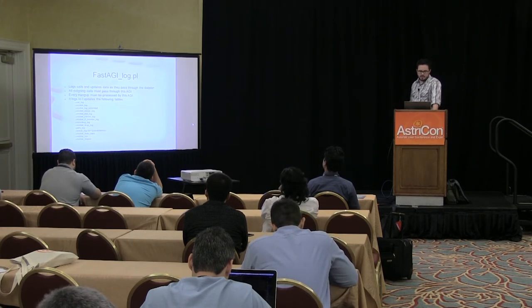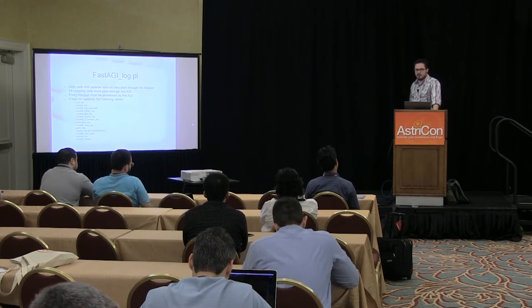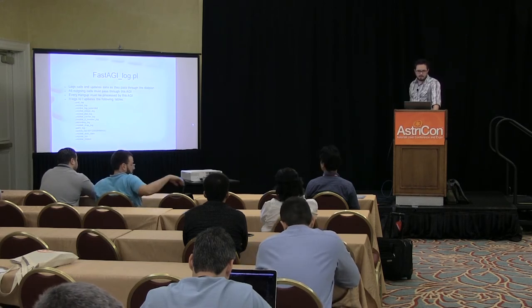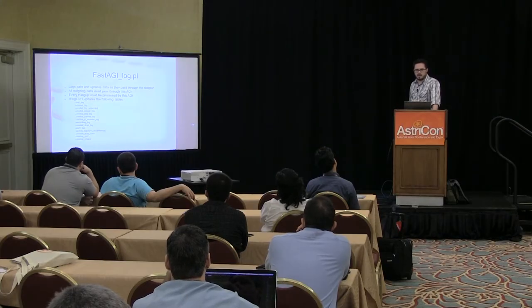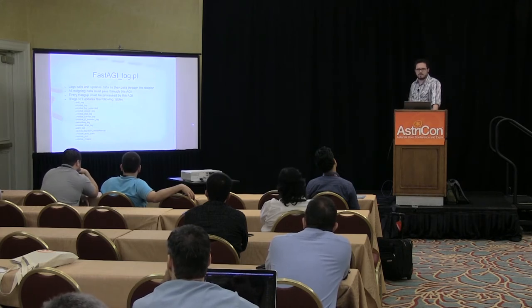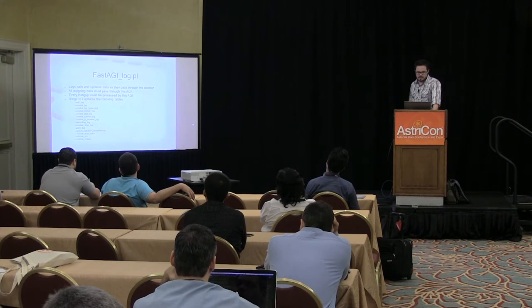The fast AGI log logs calls and updates data as they pass through the dial plan. All outgoing calls must pass through this AGI script, whether for ViciDial or something else, unless you're calling to an agent extension. Every single hangup needed to be processed by this script whether it had anything to do with ViciDial or not. As such, there is a call to it in every single context, macro, and anything you build into Asterisk for ViciDial. It also logs to and updates a whole bunch of tables.